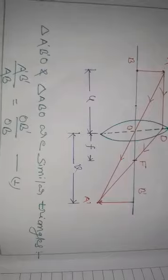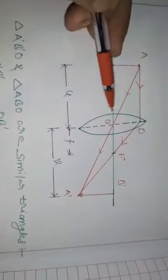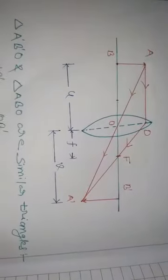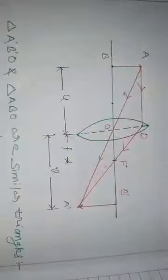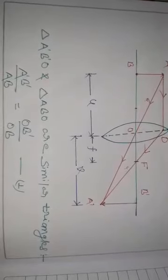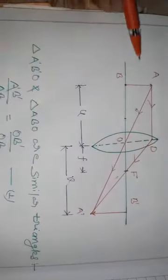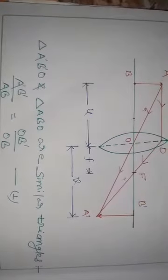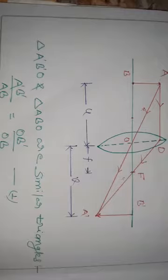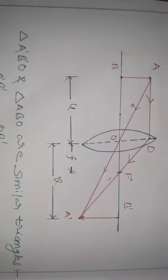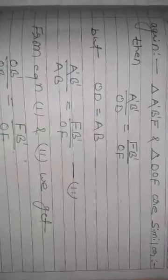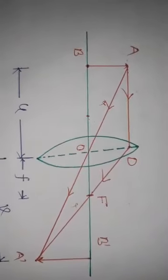Now consider the triangles. Triangle A'B'O and triangle ABO are similar triangles. By the basic proportionality theorem: A'B'/AB = OB'/OB. This is equation number one. Also, triangle A'B'F and triangle DOF are similar triangles.